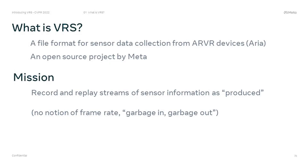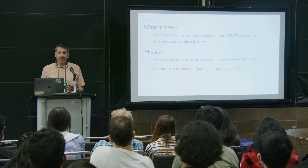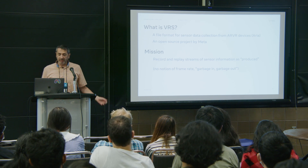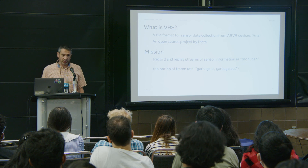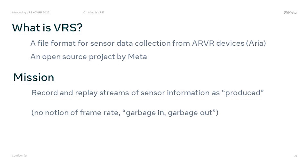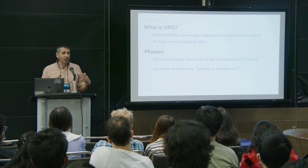First, what is VRS? VRS is a file format for sensor data collection. It's really optimized for the AR/VR domain. In particular, Project ARIA glasses captured their data in VRS file format. It's an open source project available on GitHub. The original mission of VRS was simply to capture sensor data as it was produced by sensors. It's not a video capture format — it is really meant to capture sensor data and play it back as it was later.